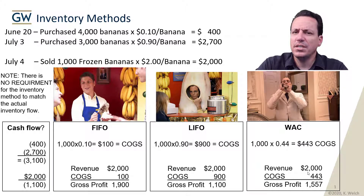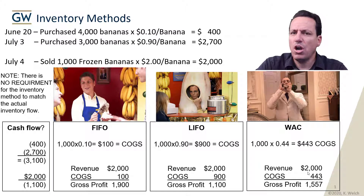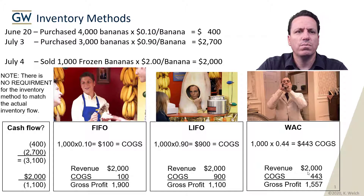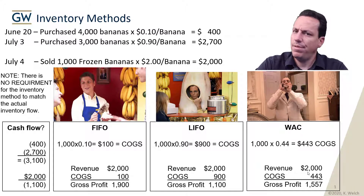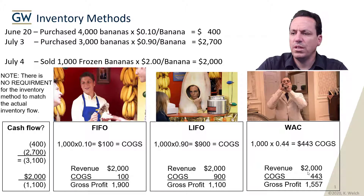Weighted average cost is basically a peanut butter approach. We take the total amount spent on inventory, divide by how many items of inventory we have, and that's our cost of inventory. We take that weighted average cost, and there's not as much nuance going on — it's always going to be in between LIFO and FIFO.